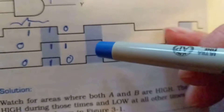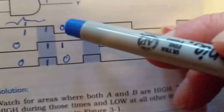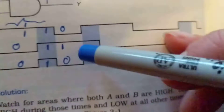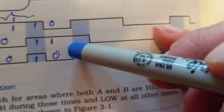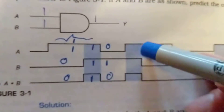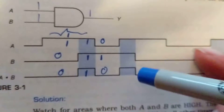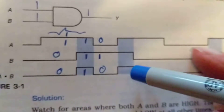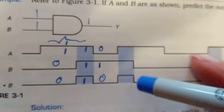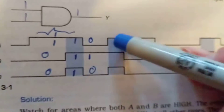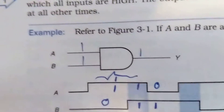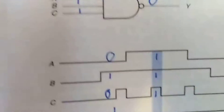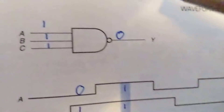Now this is a one again. It was a zero, now it went up to a one; this stayed as a one; this went from zero to one. In other words, A is a one, B is a one — that makes Y a one. Exactly our truth table. That's an AND gate.